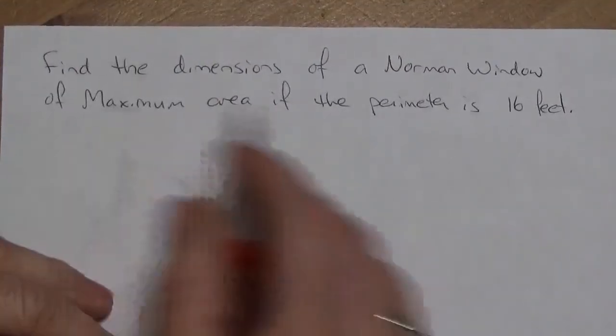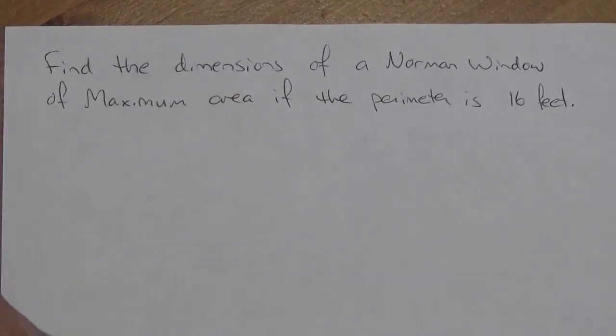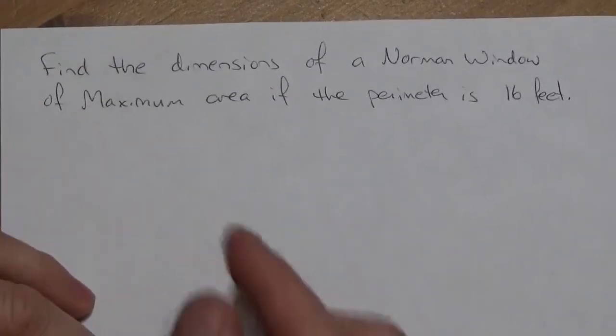In this video, we're going to look at the problem of maximizing the area of a Norman window, given a restriction on its perimeter. Alright, hi everybody. I'm just going to quickly do a Norman window question. This one pops up a lot in calculus texts. It's kind of a classic sort of problem here.